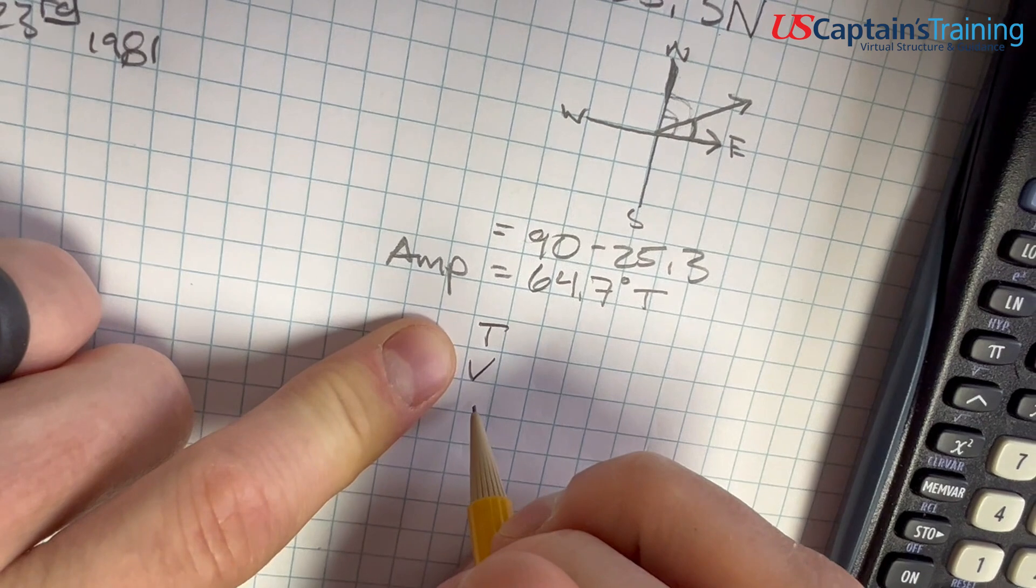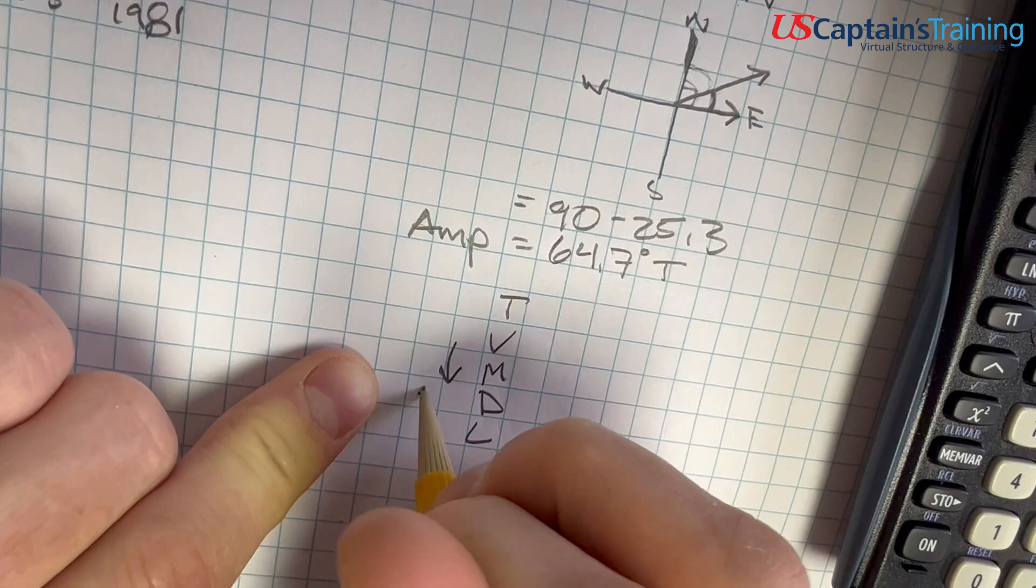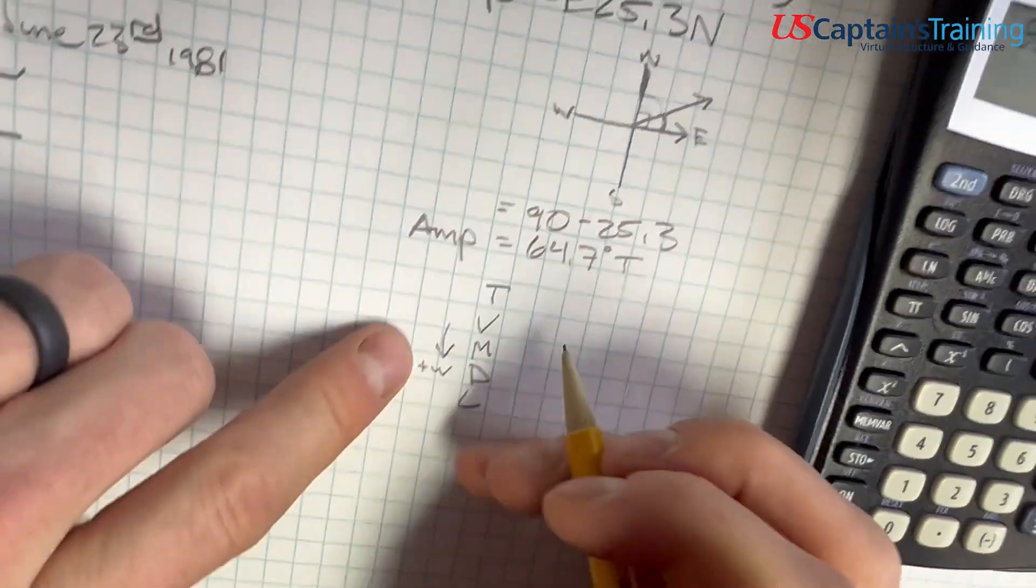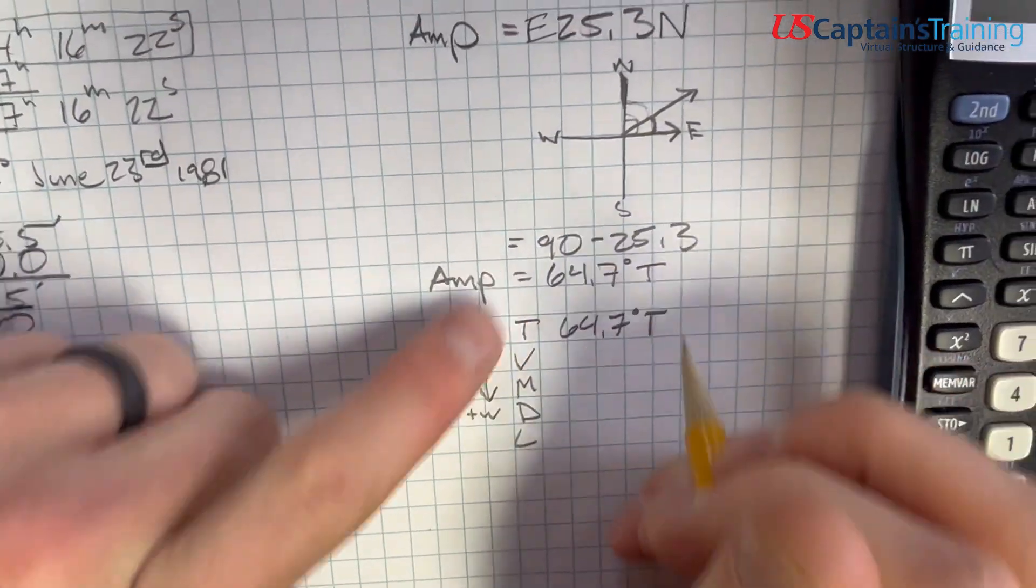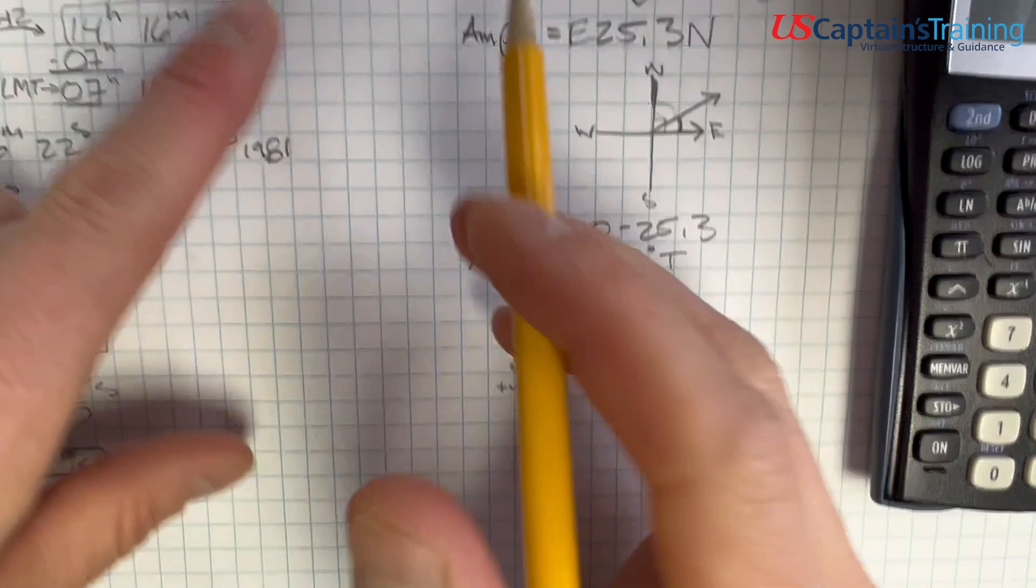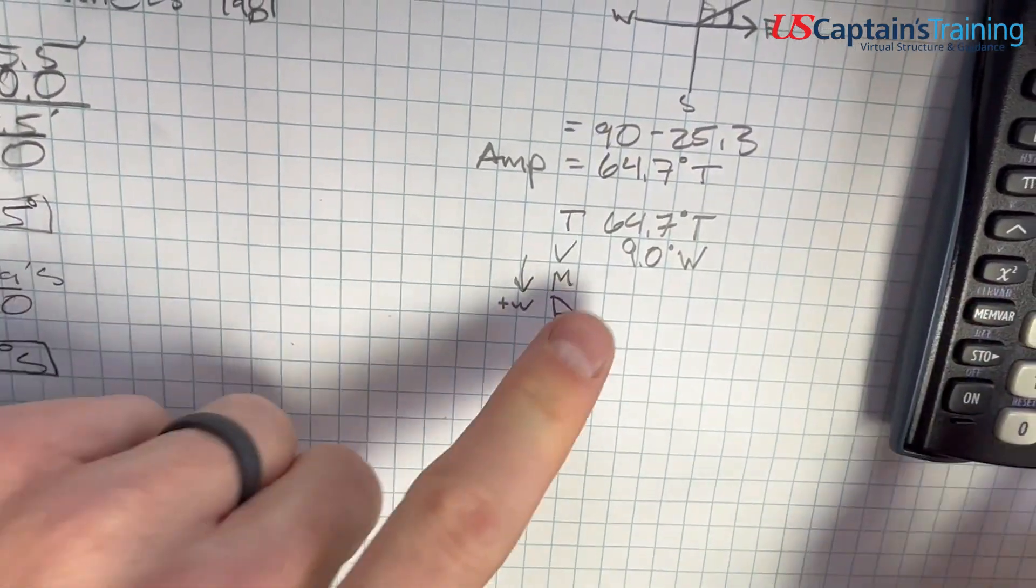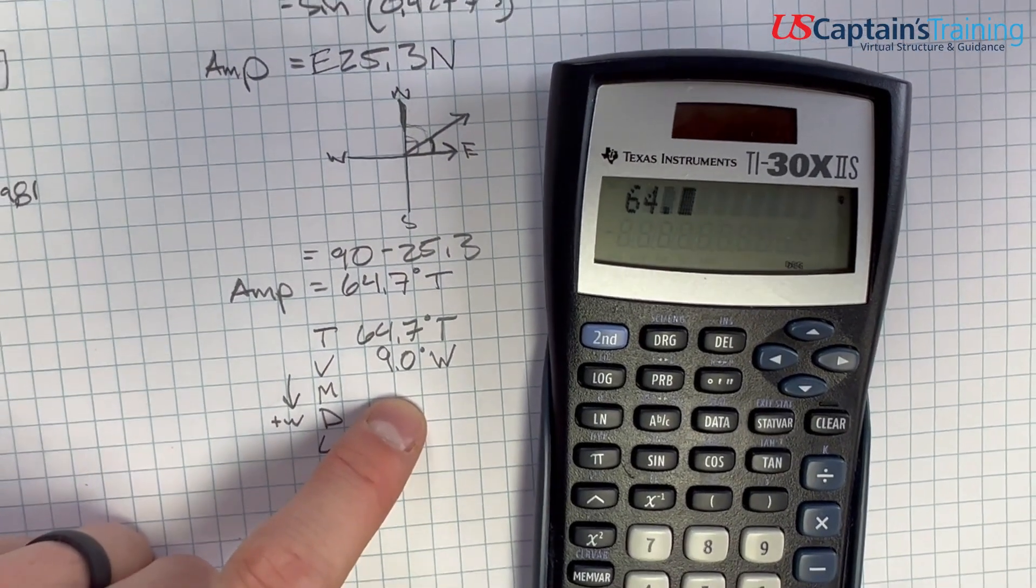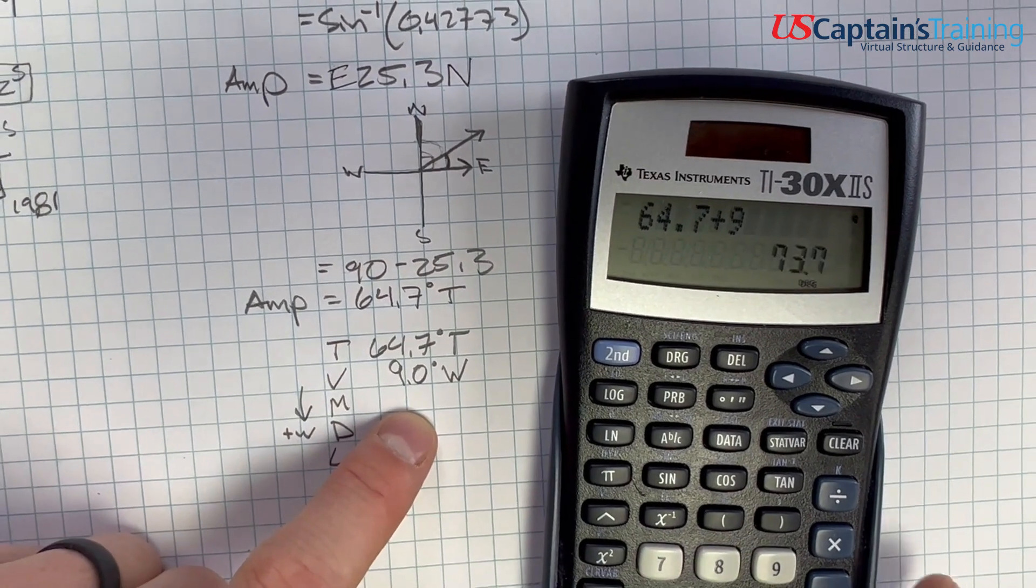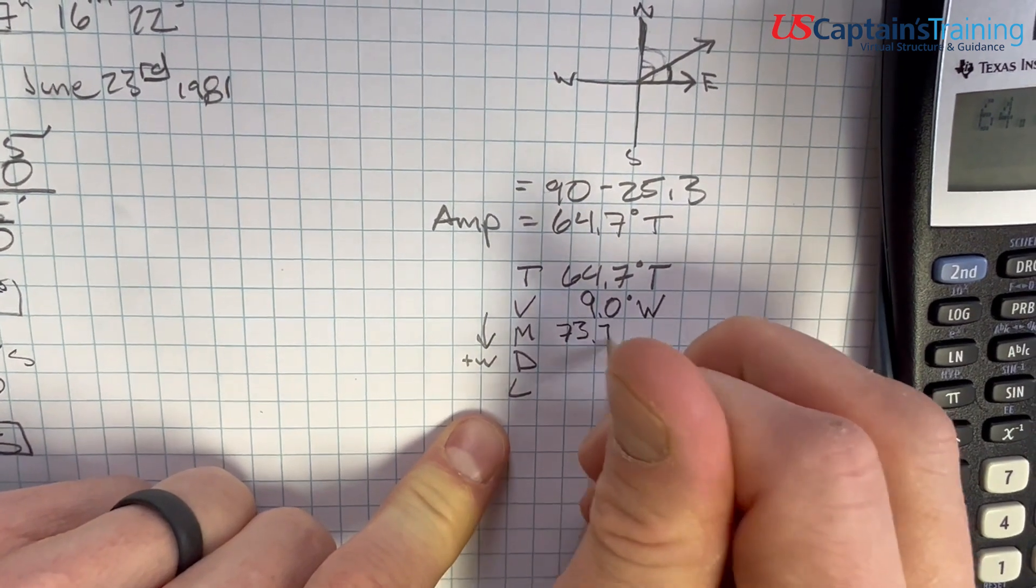So true, variation, TVMDC. When we're going down, we add west. We do the opposite to east. True is 64.7 degrees, we just calculated that. Variation was given as 9 degrees west. When we're going down, we add west. So we'll get 64.7 plus 9 equals 73.7 degrees magnetic.